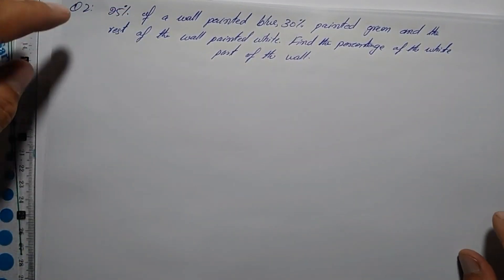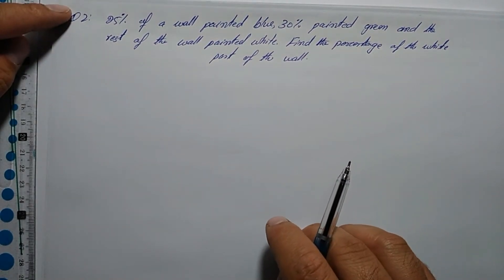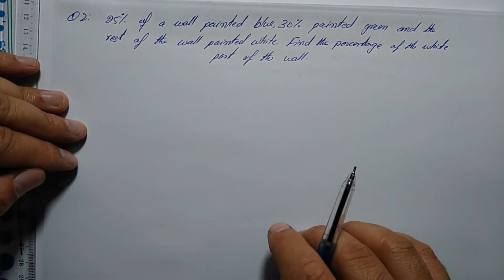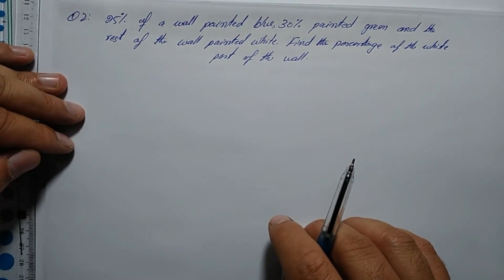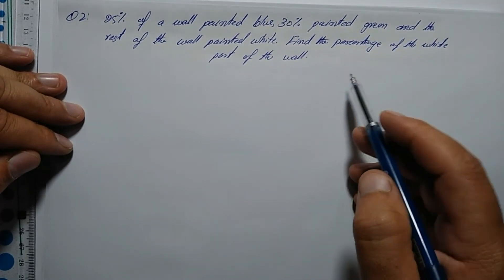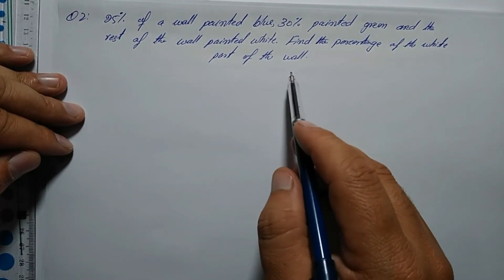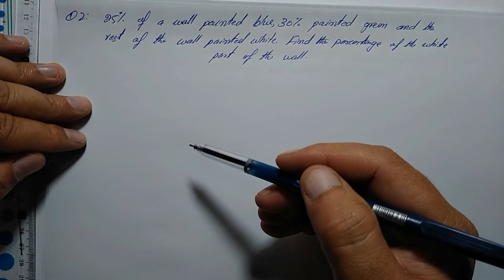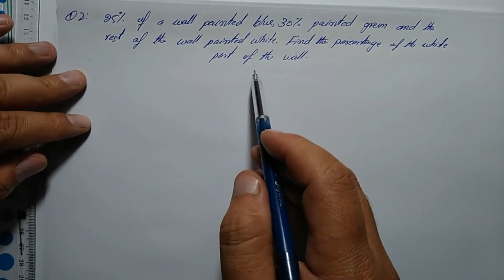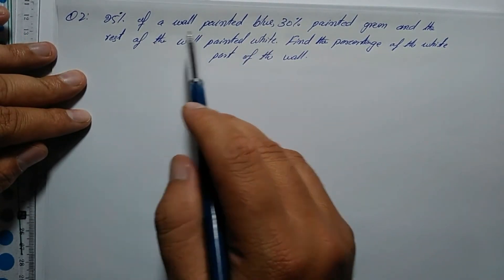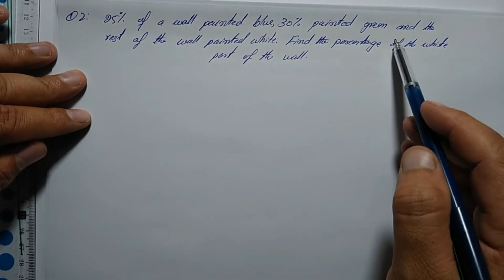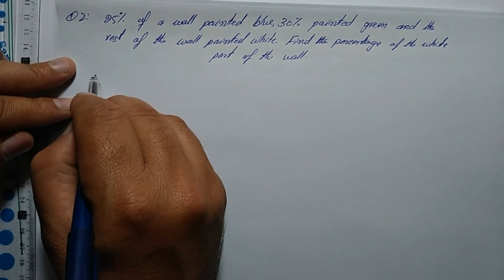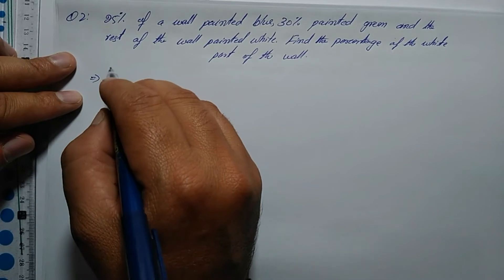Question number 2: 25% of a wall is painted blue, 30% painted green, and the rest of the wall is painted white. Find the percentage of the white part of the wall. This is similar to the question we just solved.